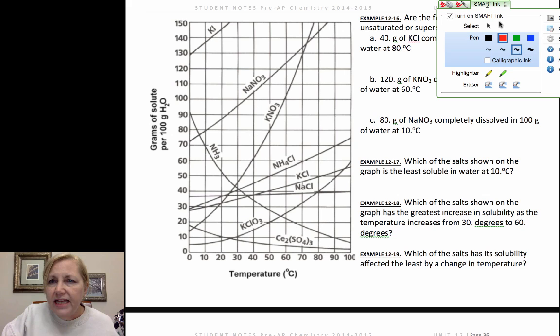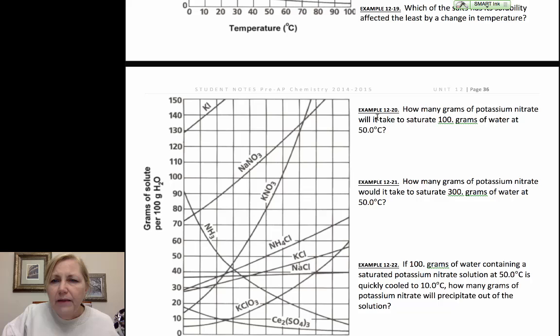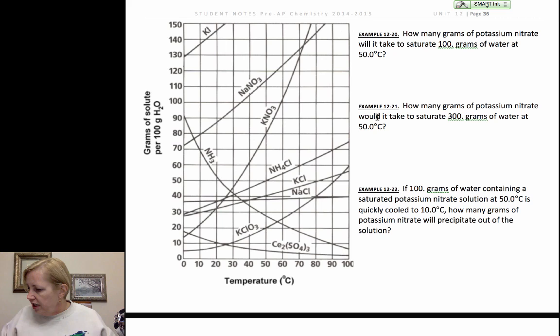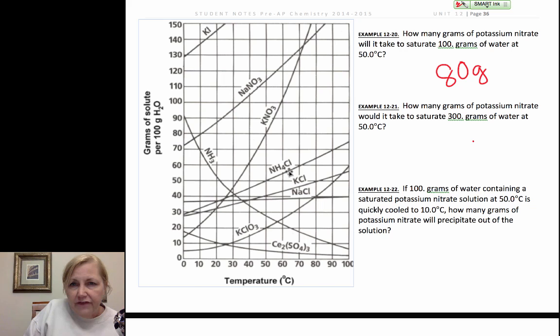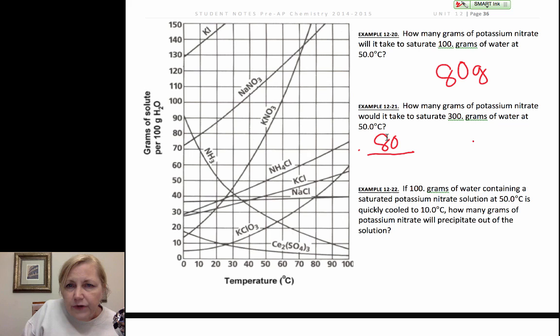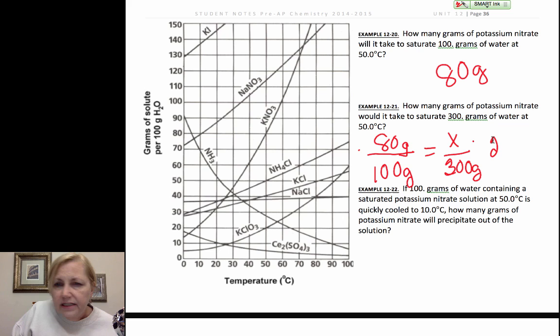So, hopefully, you're getting a good picture here of how to interpret these. Let's go ahead and do just a couple of the mathematics one. I'm going to assume you can do kind of a straightforward read off the graph. The answer to 1220, let me go ahead and write that down for you, is 80 grams. So, I'm going to let you make sure you can read that off the chart. Now, the second one says, how many grams would it take to saturate 300 grams of water at 50 degrees? So, at 50 degrees, if you look at the chart, 50 degrees, go up to potassium nitrate, and it's 80 grams. If it's 80 grams per 100 grams of water, how much is it per 300 grams? So, if you cross-multiply, you're going to get 240 grams.